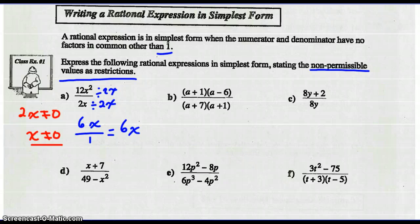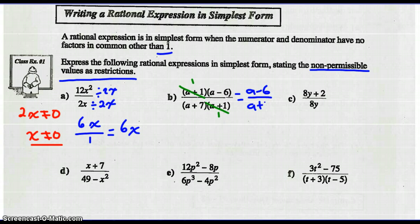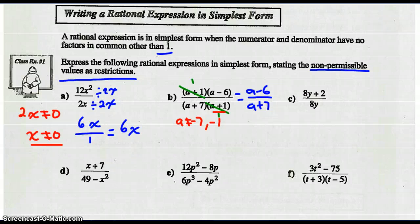Looking at part B, we can reduce any complete factor. So (a+1) divided by (a+1) leaves us with 1s, and we're left with (a−6) over (a+7). For the non-permissible values, a can't equal negative 7, and we also have to note that a can't equal negative 1. So it's in our best interest to state the non-permissible values before we start reducing.